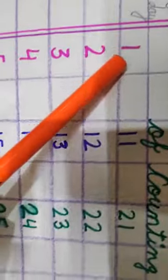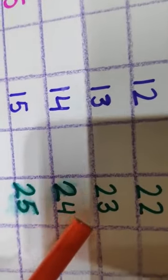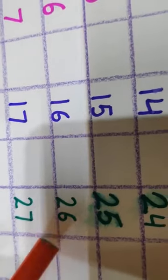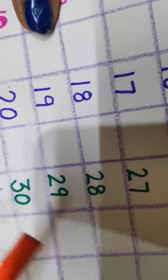Today we have learnt 1 to 30. Once again I will speak. 21, 22, 23, 24, 25, 26, 27, 28, 29, 3, 0, 30.